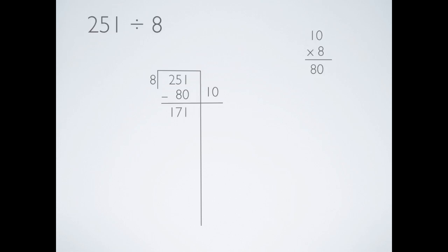Next, ask yourself, how many groups of 8 are in 171? There are at least 10 groups of 8, so you can multiply by 10 again. Again, put another line a little beyond the extended line, and put another 10 to show 10 more groups of 8. 80 subtracted from 171 equals 91.